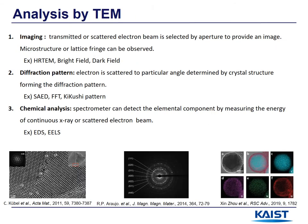There are three possible operating modes of TEM. First, TEM can provide an image of the sample, using which we can observe the microstructure, dislocation, as well as lattice fringe. Second, because electrons are scattered to a particular angle dependent on the crystal structure, we can obtain diffraction patterns. Lastly, TEM also provides chemical properties — using a spectrometer, we can check what elements are contained.